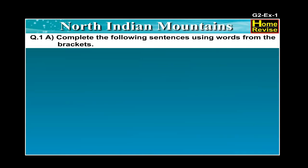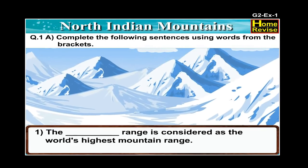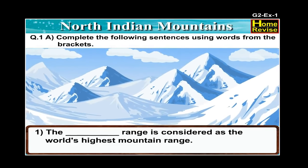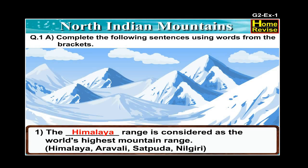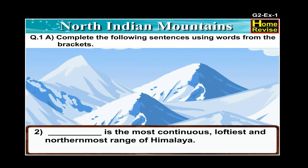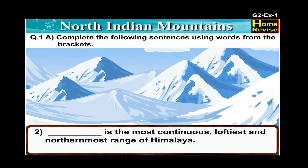Exercise question number one. Complete the following sentences using words from the brackets. Number one: The dash range is considered as the world's highest mountain range. Options are Himalaya, Aravalli, Satpura, Nilgiri. The correct option is Himalaya. The Himalaya range is considered as the world's highest mountain range.